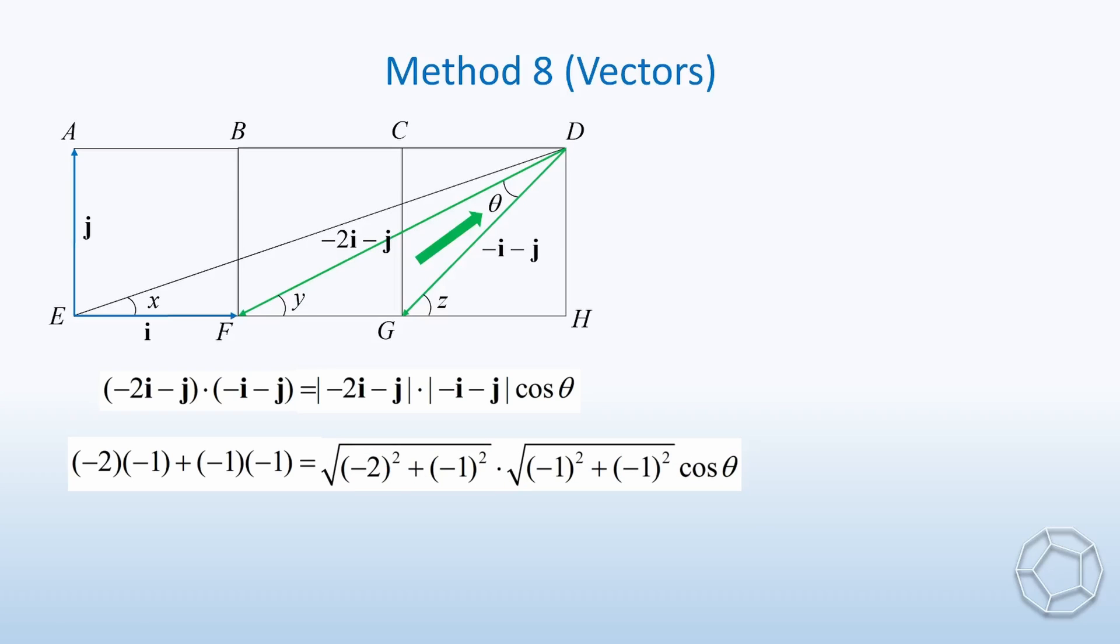After simplification, we have cosine theta is equal to 3 over square root 10. What's so special about this value? By drawing right-angled triangle again, we have tangent theta is equal to 1 over 3. And this is exactly equal to tangent x. Therefore, theta is equal to x. Now, by exterior angle of triangle, the result follows for the eighth time.